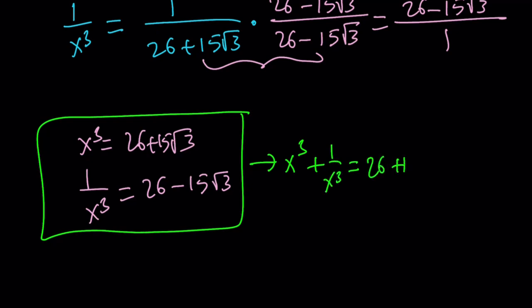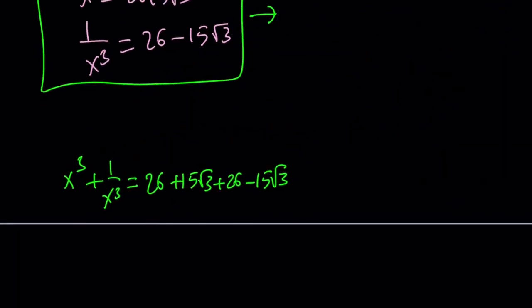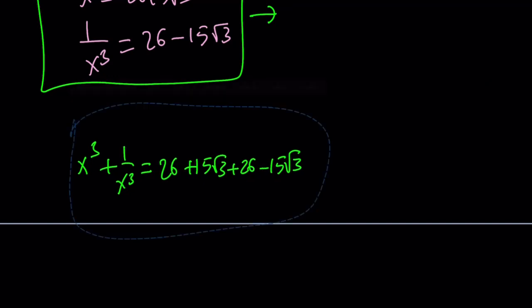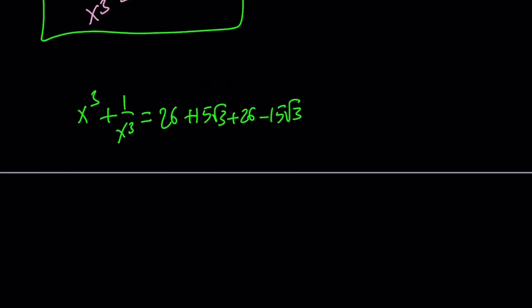So x cubed plus 1 over x cubed is just going to be the sum of these two expressions. 26 plus 15 root 3 plus 26 minus 15 root 3. So this is our sum. 15 root 3 cancels out. And we end up with 26 plus 26, which is equal to 52. So we got 52 by adding these two expressions. And that will be the answer.